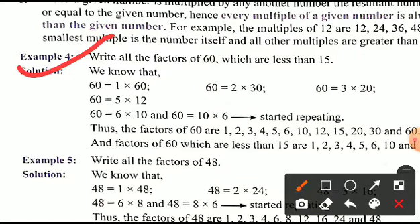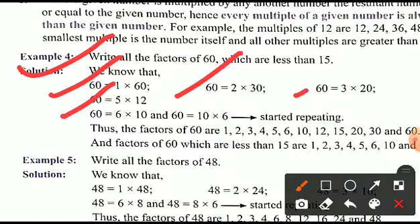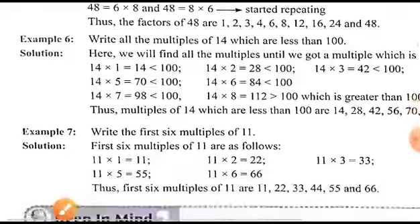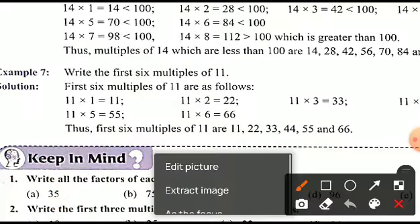Example: write all the factors of 60 which are less than 15. We can write: 60 = 1 × 60, 60 = 2 × 30, 60 = 3 × 20, 60 = 4 × 15, 60 = 5 × 12, 60 = 6 × 10. So the factors of 60 that are less than 15 are: 1, 2, 3, 4, 5, 6, 10, and 12.